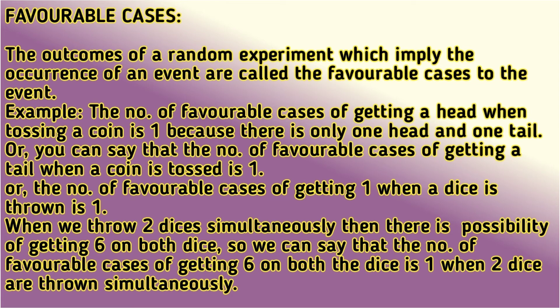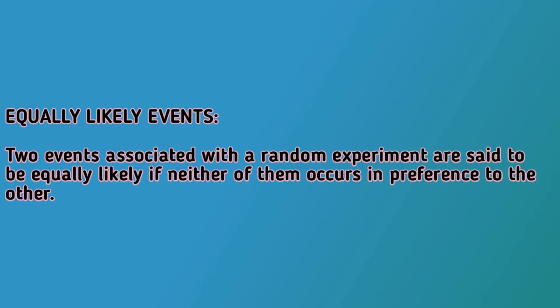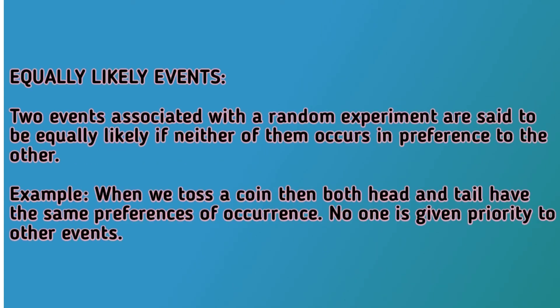Then, equally likely events. Two events associated with a random experiment are said to be equally likely if neither of them occurs in preference to the other — simply, no one is given priority over the other. For example, if you are tossing a coin, it will give you either head or tail, but you cannot definitely say that head will occur or tail will occur. So both outcomes have the same preference.